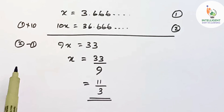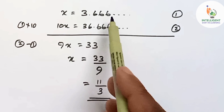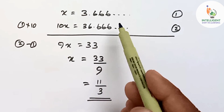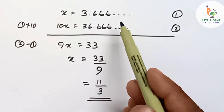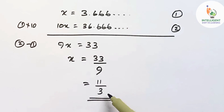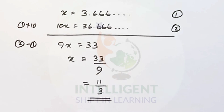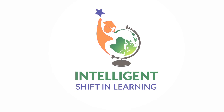So, 3.666... can be expressed in the p by q form as 11 by 3.